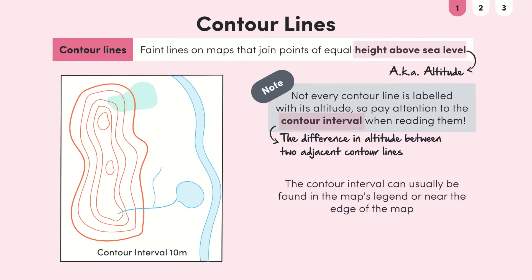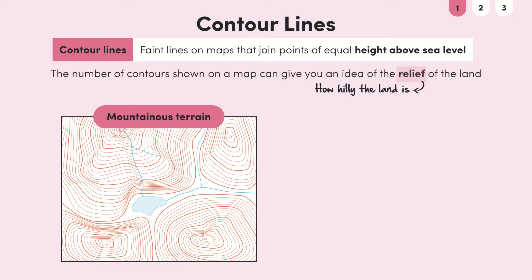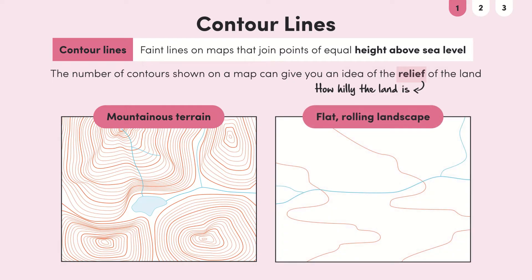Just looking at the number of contours shown on a map can give you an idea of the relief or hilliness of the land. For example, if there are lots of contours close together the area is likely to be mountainous with steep slopes. Fewer contour lines that are more widely spaced suggest that the area has a flat rolling landscape.